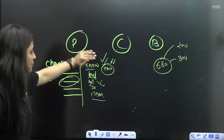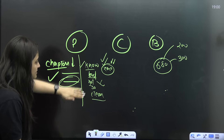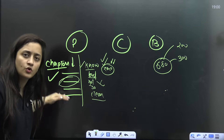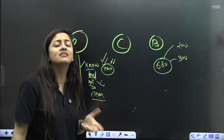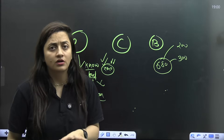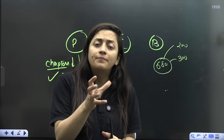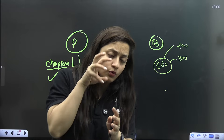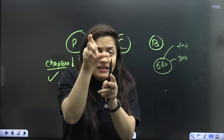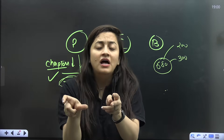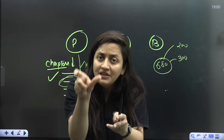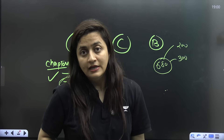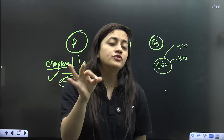Once you're done making this list of completed chapters, check whether they are the important ones or not. For the important chapters that are still pending, decide how many days you need to complete each one. That should be your approach.